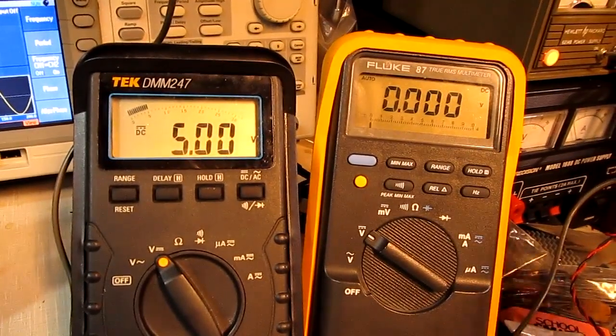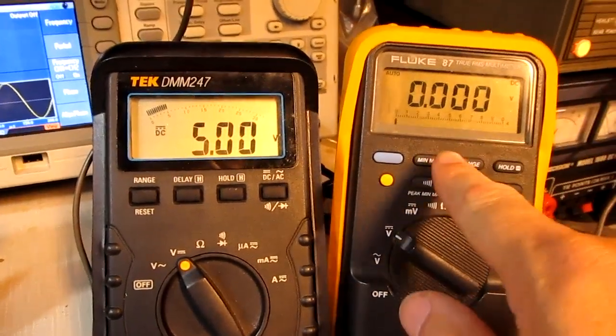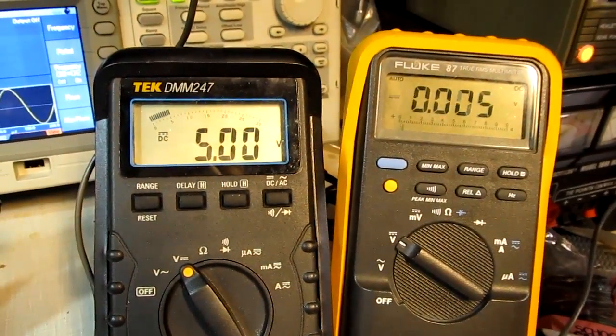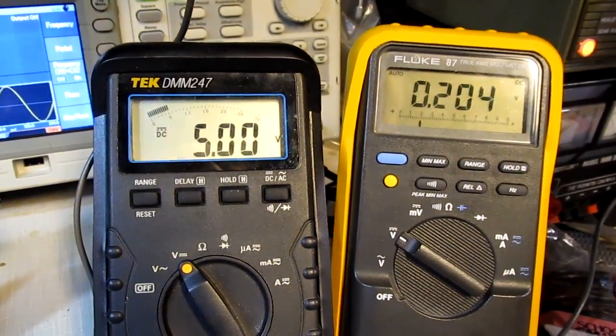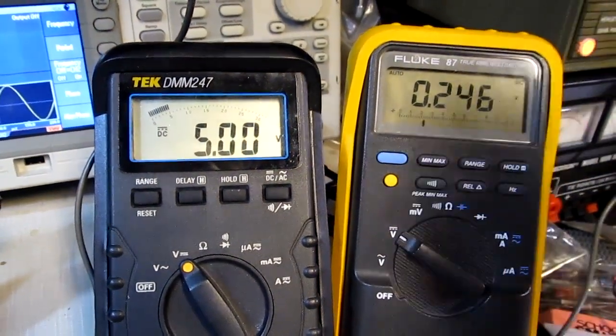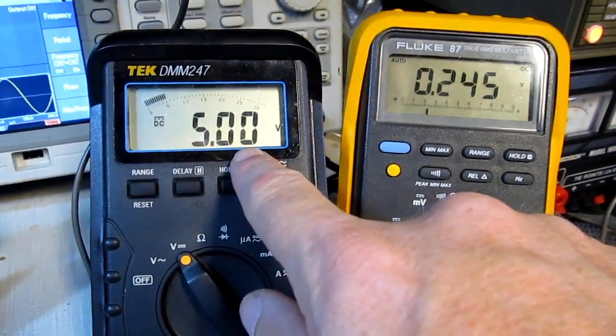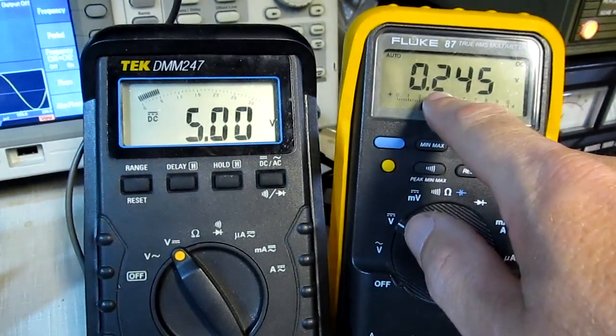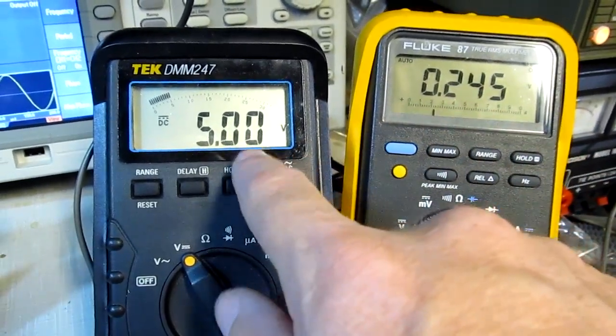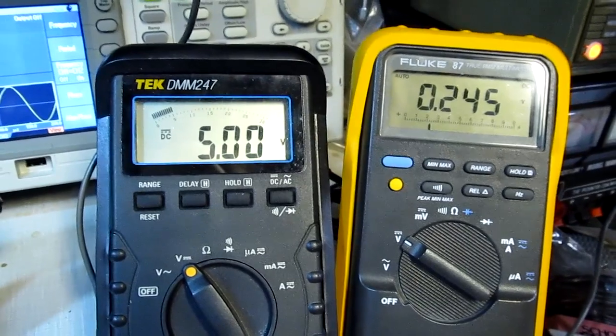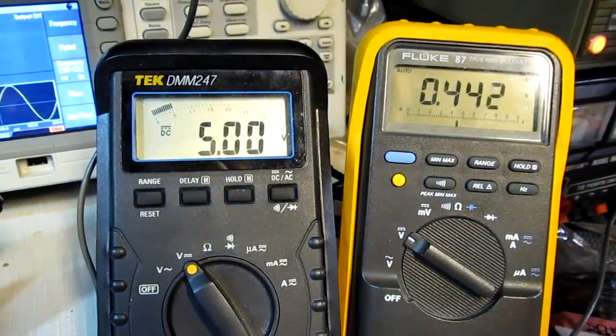As I vary the bias voltage on the base with a power supply right here, as I start turning that up, I see the base voltage coming up. At about a quarter of a volt or so, I still don't see any movement in the collector. So even though I have a little bit of bias on the base, not enough to turn the transistor on at all yet. If I keep going up, I'll start to see that move.